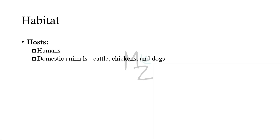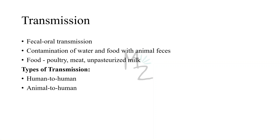Habitat. Humans are its definitive host because it causes infection in humans' small and large intestines. Domestic animals such as cattle, chickens, and dogs serve as a source of the organism for humans. Transmission is usually fecal-oral, and also by consuming water and food contaminated with animal feces, consuming undercooked poultry and meat, or unpasteurized milk. There are two types of transmission: human-to-human, which is less frequent, and animal-to-human.